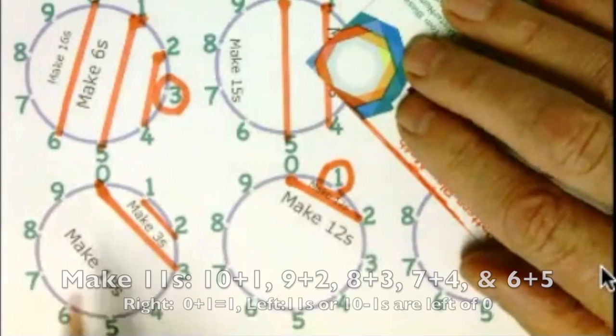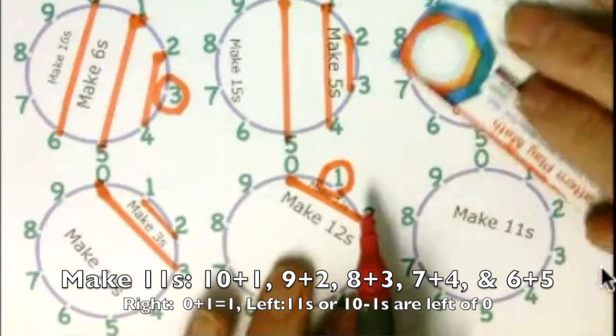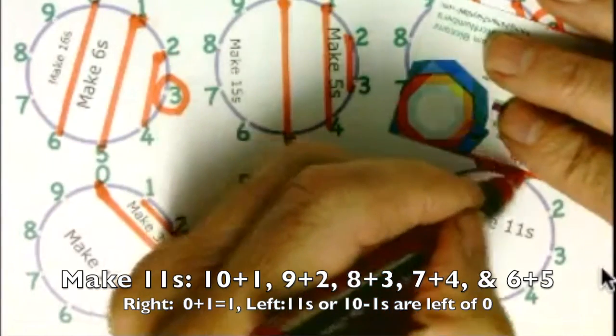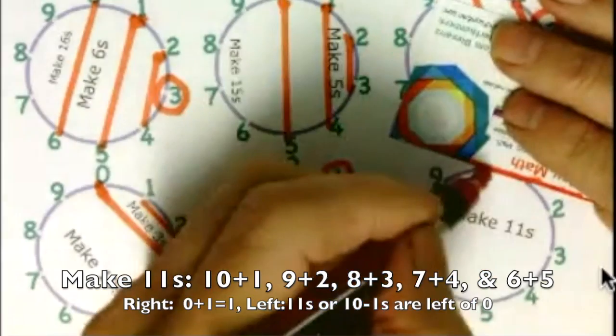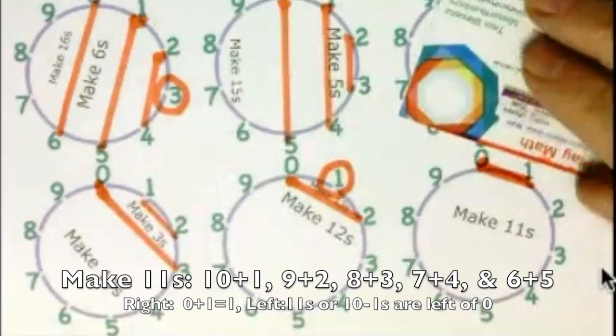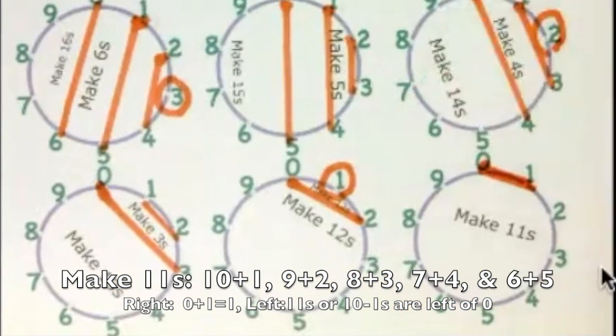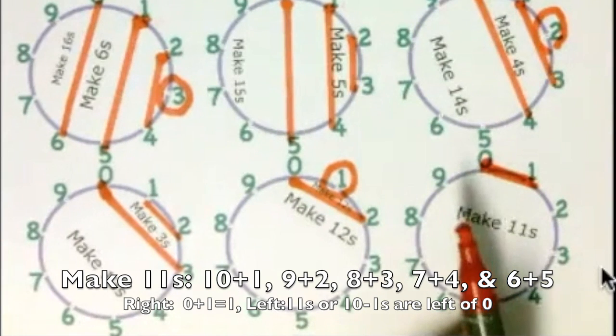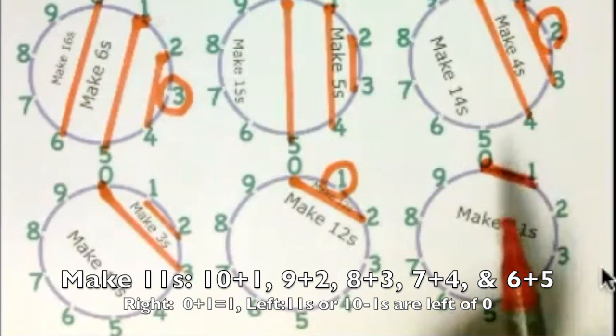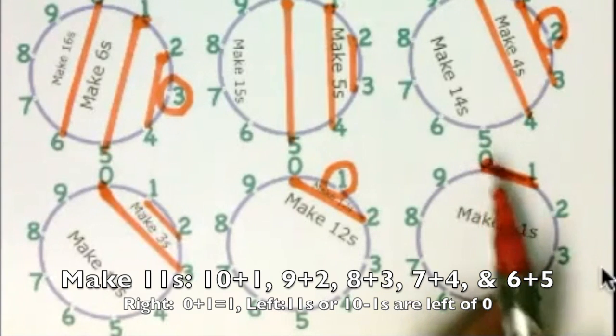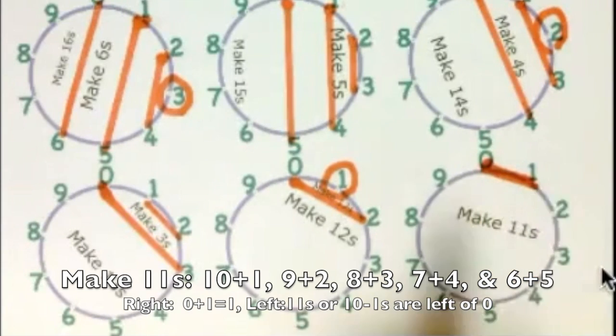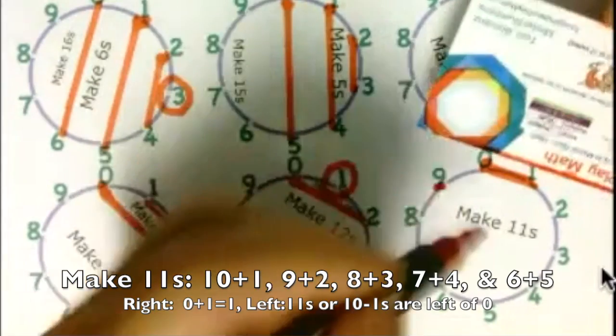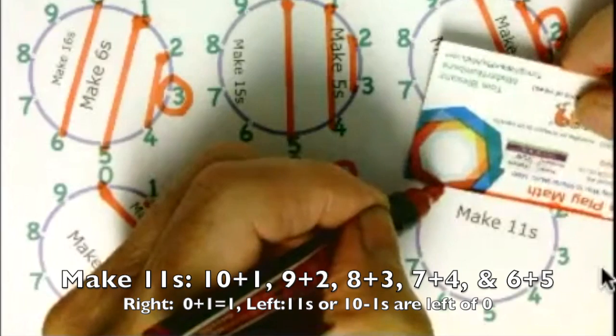Now, it also says make 12s and make 13s. So we'll get into that here. Because this can be make 1s over here, but also, this is both 0 and 10 here on the top. And because it's 0 and 10, we can think of this as 10 plus 1 is 11. And we can go through the whole wheel making 11s. So we went down to 1 and all of a sudden we're at 11s.